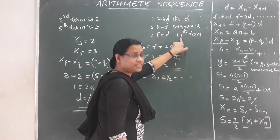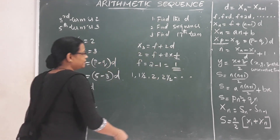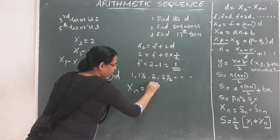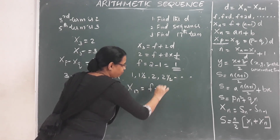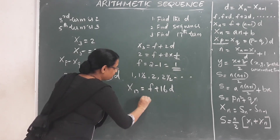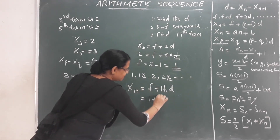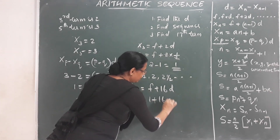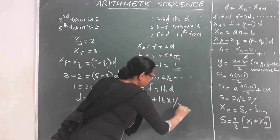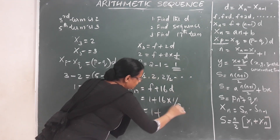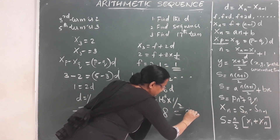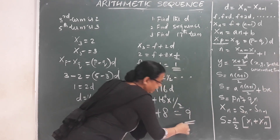Now find the 17th term: x17 equals f plus 16d, that is 1 plus 16 into (1/2), equals 1 plus 8, equals 9. So the 17th term is 9.